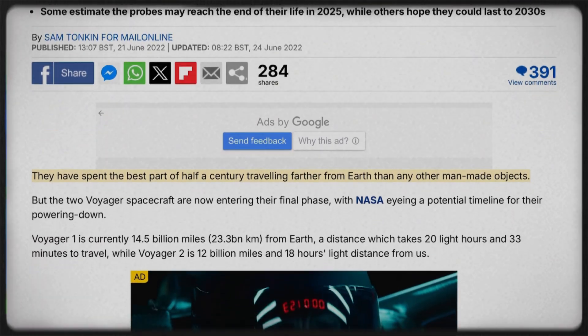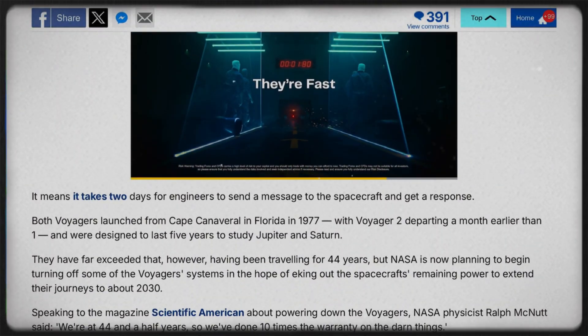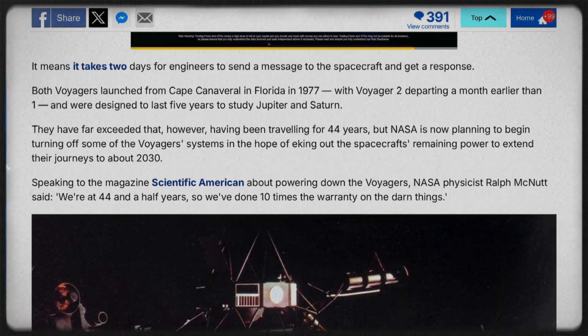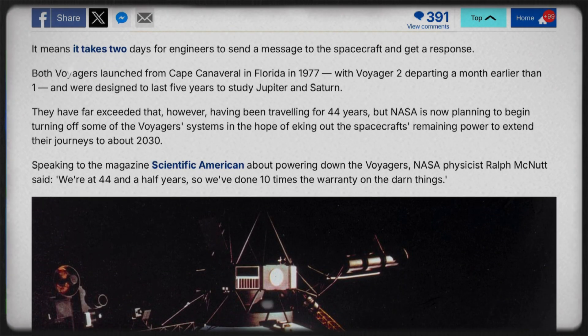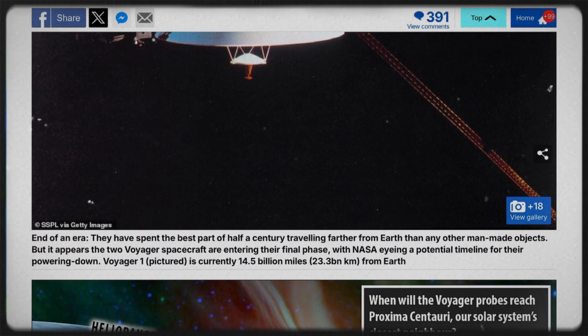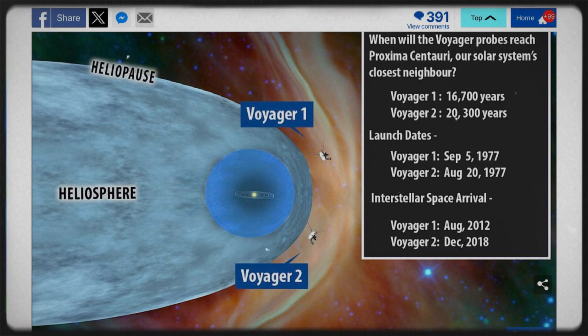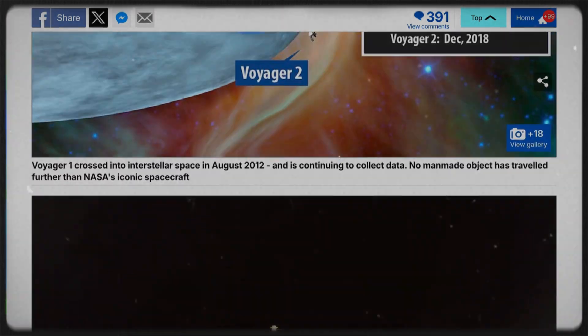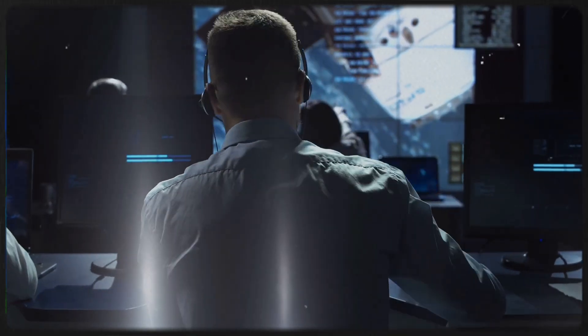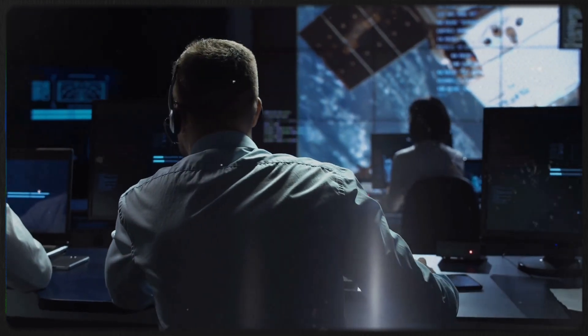It's truly extraordinary that humanity managed to send probes into deep space that have endured for so long, especially considering the technology available at the time. Voyager 1 and its twin, Voyager 2, have provided us with unprecedented views of the two largest planets in our solar system. By 2030, both spacecraft will be officially decommissioned. NASA is immensely proud of their performance, noting that they have functioned 10 times longer than originally anticipated.